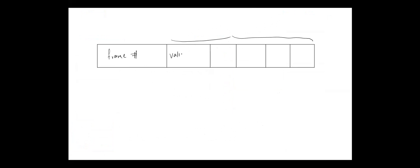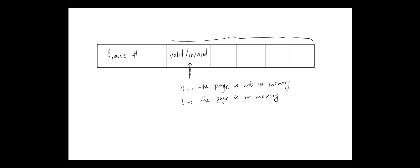One of these bits is called the valid/invalid bit, or sometimes the present/absent bit. The purpose of this bit is to tell the operating system whether the referenced page is in memory or not. Usually if this bit is 0, the page is not in memory, and if it's 1, the page is in memory. If the page is in memory we continue referencing it as usual; if not, we have to bring it from the backing store. This bit is useful for implementing virtual memory.